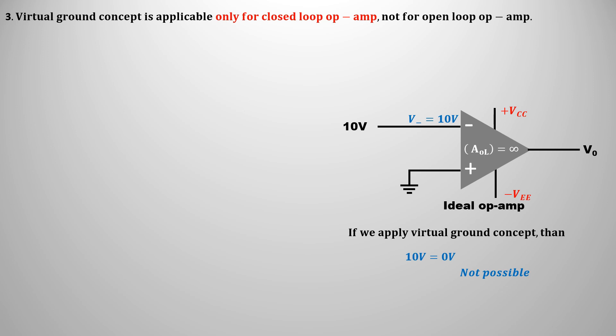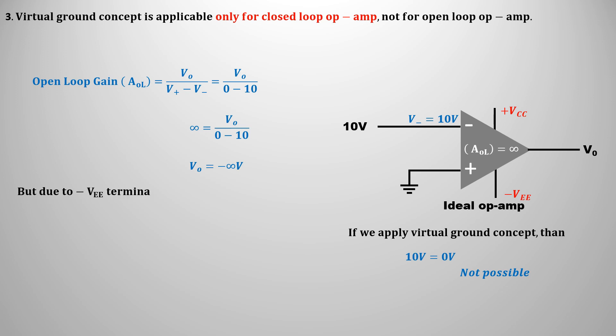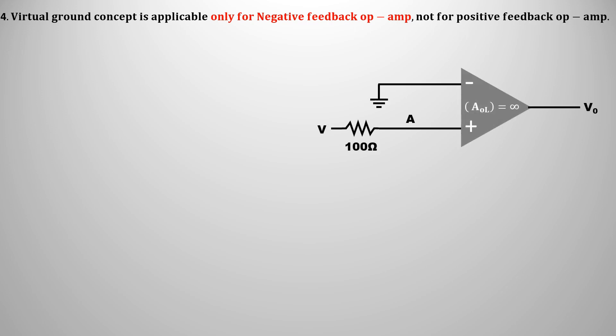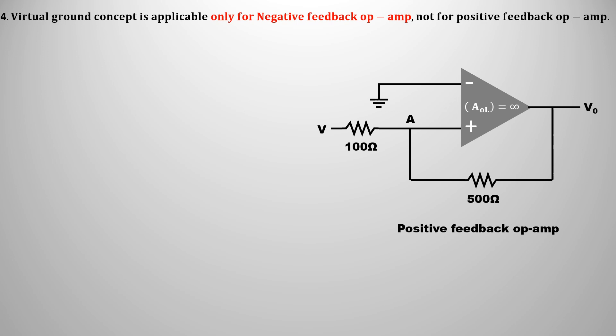For the output of this open-loop operational amplifier, using the open-loop gain formula, the output voltage should be minus infinity. But due to the -Vee terminal, the output cannot exceed -Vee volts. The fourth limitation is that the virtual ground concept is applicable only for negative feedback operational amplifiers, not for positive feedback. A positive feedback operational amplifier — one whose non-inverting terminal is connected to the output — cannot use the virtual ground concept.